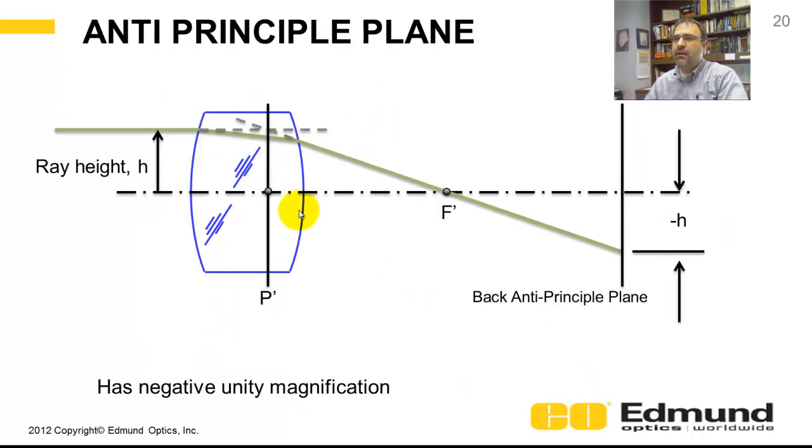Here is the anti-principle plane. The anti-principle plane has negative magnification, negative unity magnification. If you have a ray height here of h, the back principal plane occurs where you have negative h.